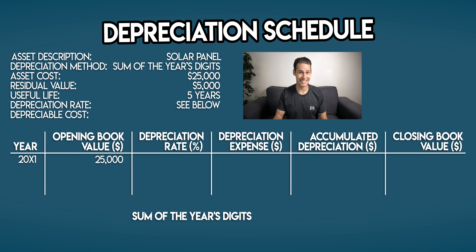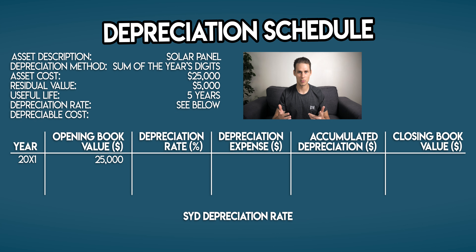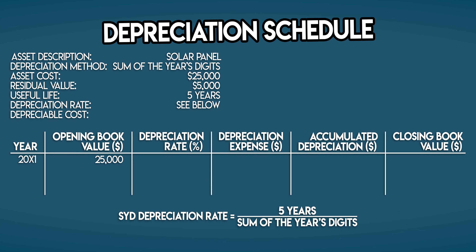Now let's work out your sum of the year's digits depreciation rate for year one. By the way, we often shorten sum of the year's digits to just SYD. Your SYD depreciation rate equals the remaining useful life of your asset divided by the sum of the year's digits. Remaining useful life is exactly what it sounds like — how many useful years you have left on your solar panel. We said it has a useful life of five years, so in year one its remaining useful life is also five years. The top line changes each period, but the bottom line — the sum of the year's digits — doesn't change; we only have to work it out once.